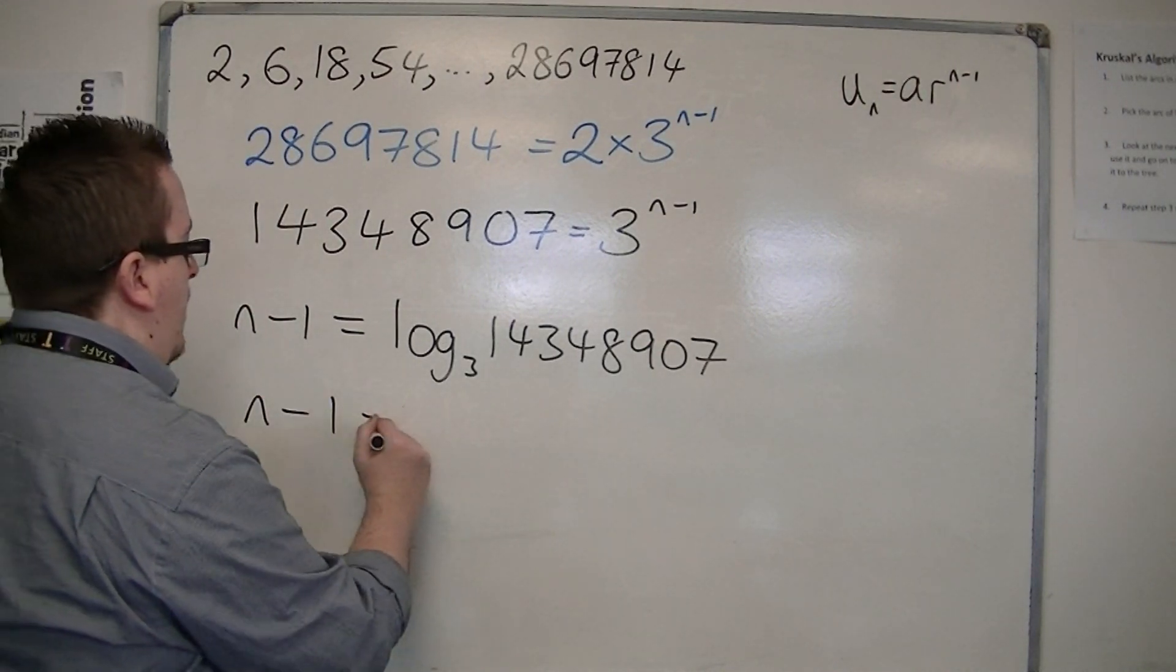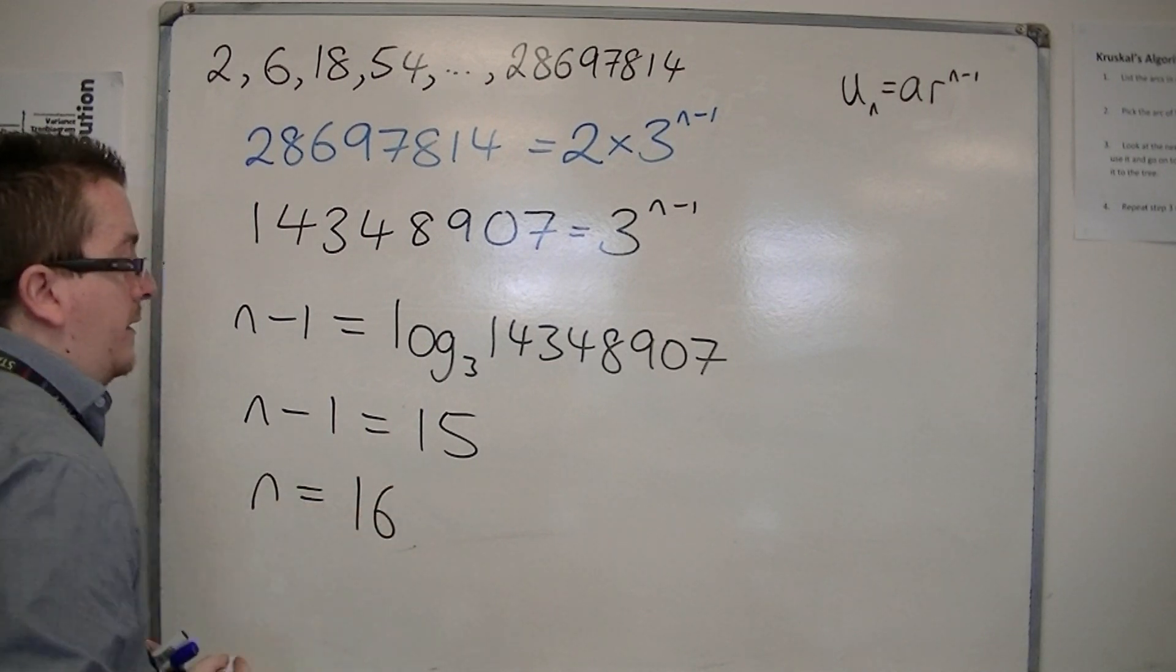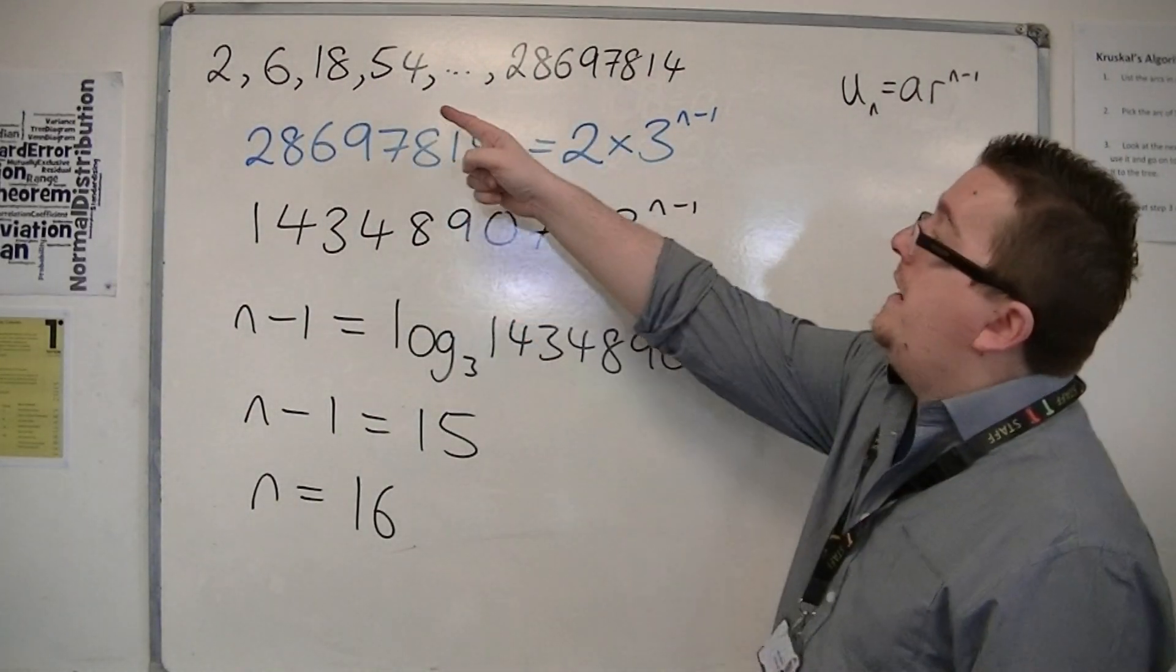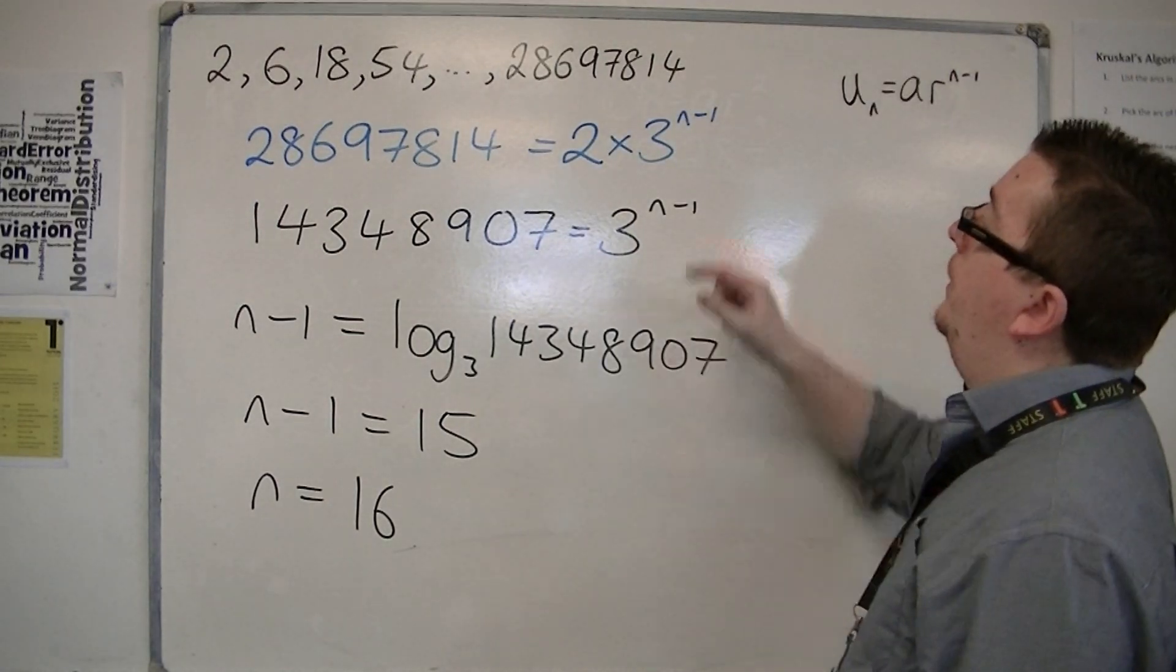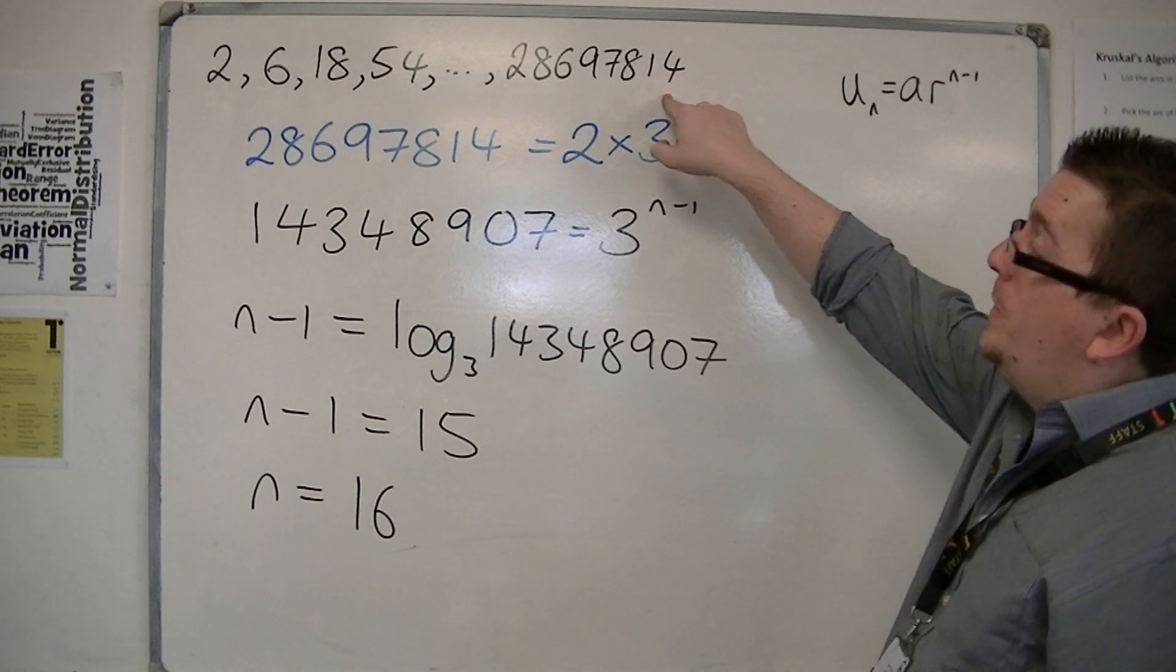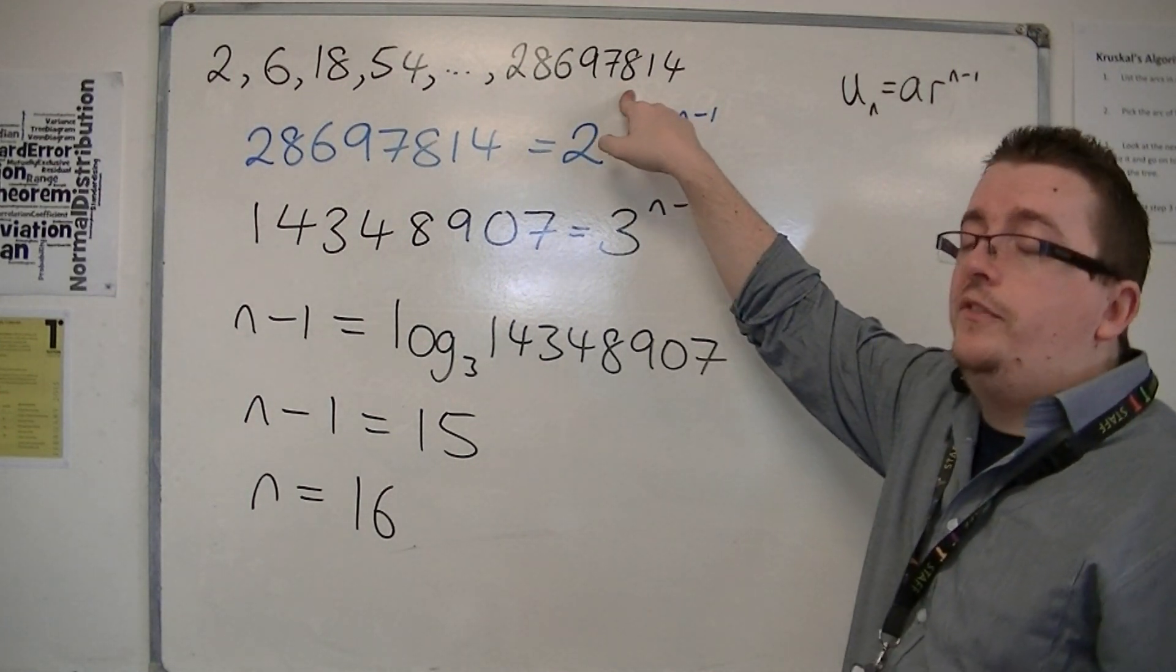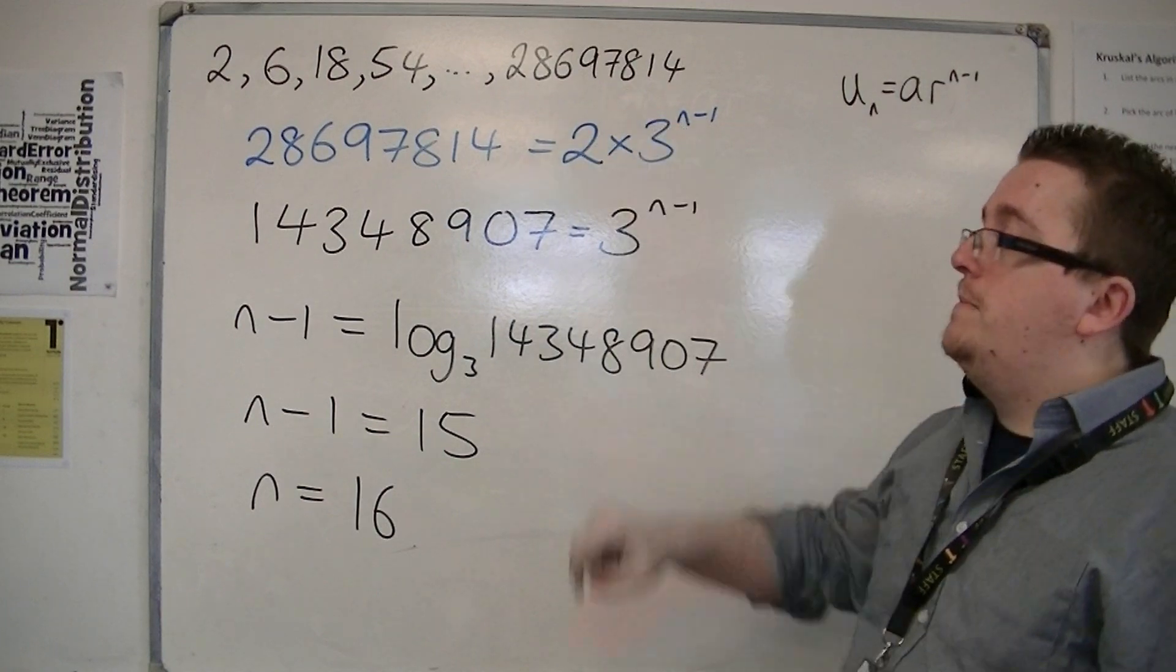So, that means n minus 1 is 15. And so, n is 16. So, that means that there are 16 terms in this sequence. This last one is the 16th term. 28697814 is the 16th term in the geometric sequence.